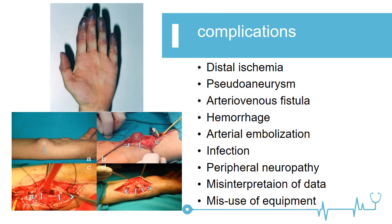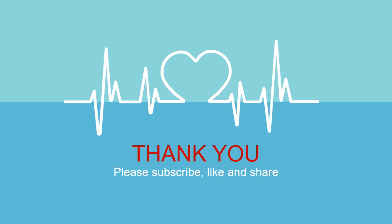Complications of invasive arterial blood pressure monitoring include: distal ischemia due to thrombosis, pseudoaneurysm from repeated arterial puncture, arteriovenous fistula, hemorrhage, arterial embolization, infection, peripheral neuropathy, and misinterpretation of data. Someone not aware of the arterial line can misinterpret the data, give strong drugs, or cause accidental drug administration via the arterial line. Thank you very much. Please subscribe to the channel and like the video. In the next video we will discuss the waveforms of invasive blood pressure monitoring.